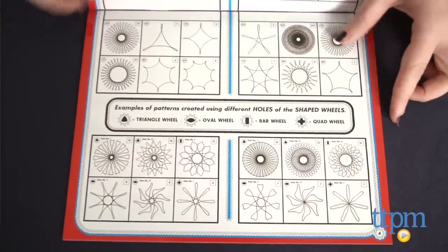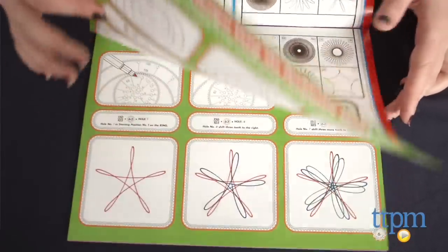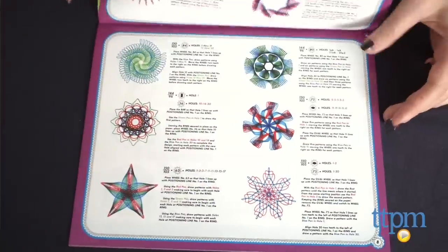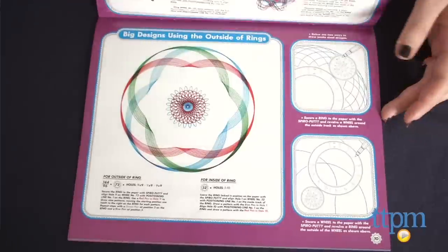Whichever design you choose, you'll need to adhere your center ring, bar, or Spiro track down with the included Spiro putty. This will hold it in place as you design.